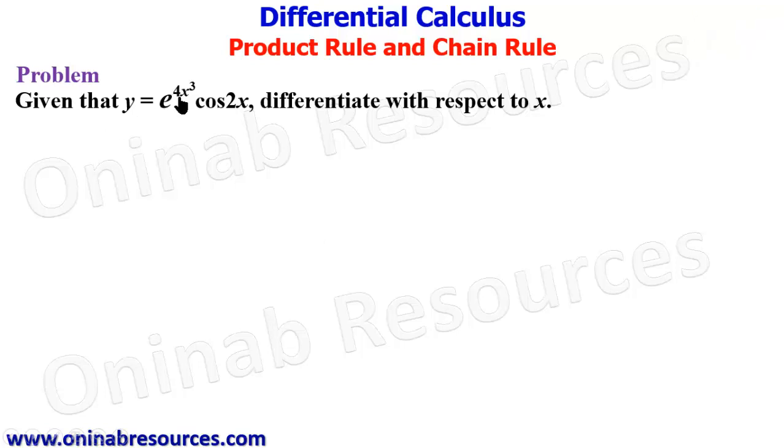We have our problem here. Given that y equals e raised to power 4x³ cos 2x, differentiate with respect to x. Here we have product of two functions, the first function being an exponential function and the second function being a trigonometric function.